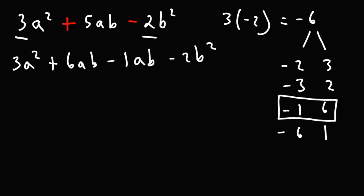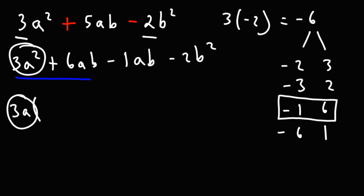Now at this point, what you need to do is factor by grouping. So we're going to take out the GCF — the greatest common factor — in the first two terms, and that's going to be 3a. 3a squared divided by 3a is a.